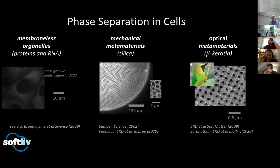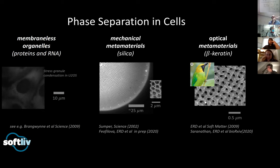Here's an example from a bird: a beautiful three-dimensional nanostructure made out of beta keratin, which is a protein. This structure has an exotic symmetry that no soft matter scientist can make at this length scale — it's called a single gyroid network. I'm not aware of any human being who can make this structure, but birds do it all the time. This is another structure hypothesized to be formed by phase separation. Examples like this have motivated me to try to understand the limitations of phase separation inside biology, how biological systems exploit and control it.